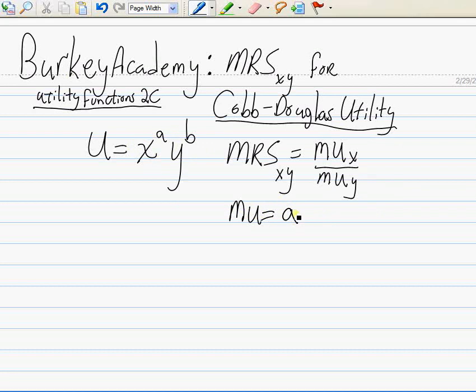Multiply by the exponent times x to the a minus 1, because we subtract 1 from the exponent, times y to the b. That doesn't change since it's a partial derivative. That's the marginal utility of x.